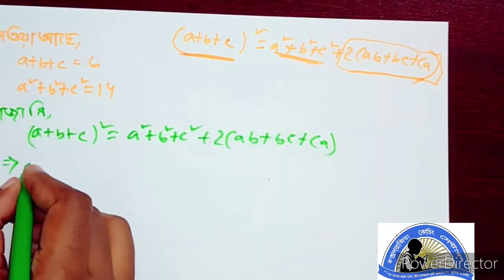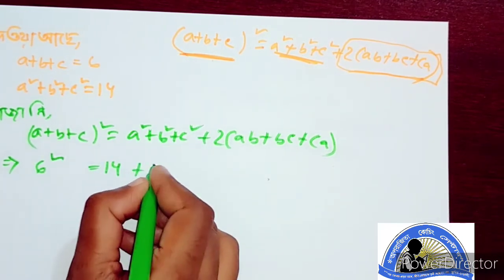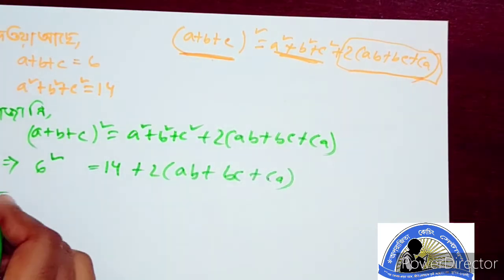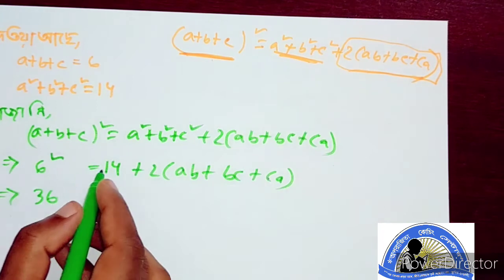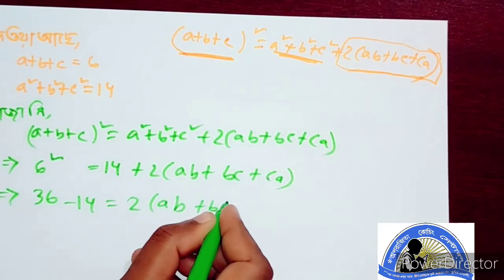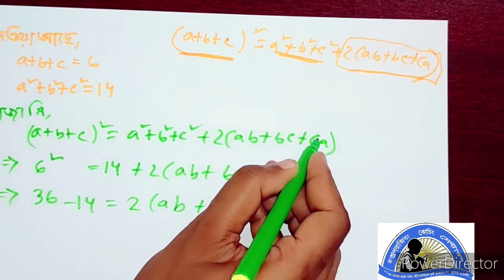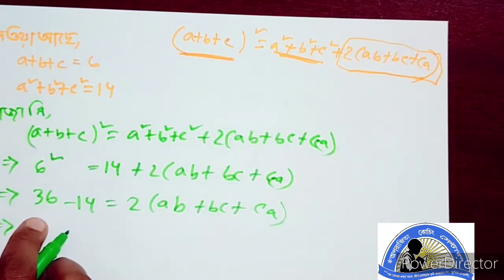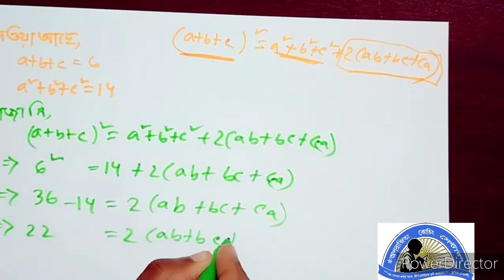Here, a plus b plus c gives a squared plus b squared plus c squared. A squared plus b squared is a squared plus 4 into a squared and we can see this. The square of a plus b plus c is 36 plus 14. So 36 minus 14 equals 22, which equals 2 into ab plus bc plus ca.